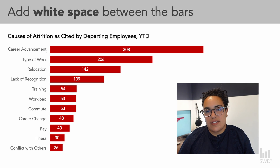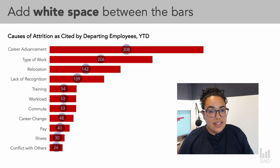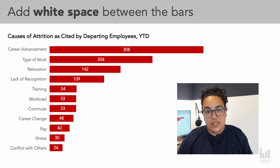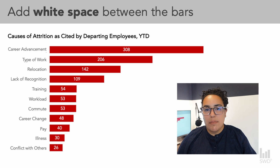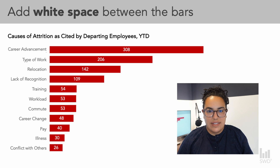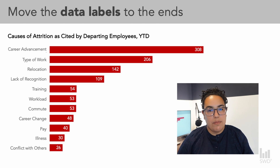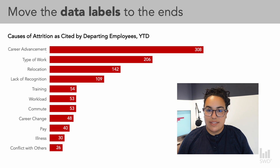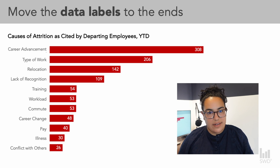Next I'll address the data markers. I like that somebody was looking at them — anytime you use data markers, know that they're going to draw attention when your audience scans the graph, but be mindful of where you place them. By putting them in the middle of the graph, we're drawing attention to the middle of the bars. Instead, we could move them to the ends of the bars, which encourages the audience to scan the entire length of the bars from left to right.